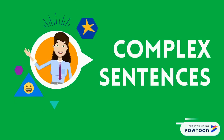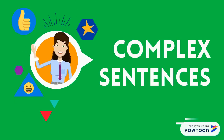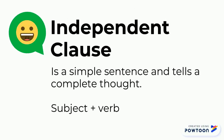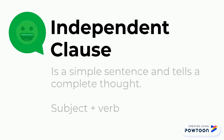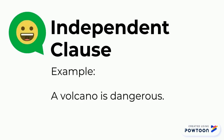Hi kids, today we're going to learn about complex sentences. An independent clause is a simple sentence that tells a complete thought. It includes a subject and a verb. For example, a volcano is dangerous. As you can observe, it's telling us a complete thought, and it includes a subject and a verb.